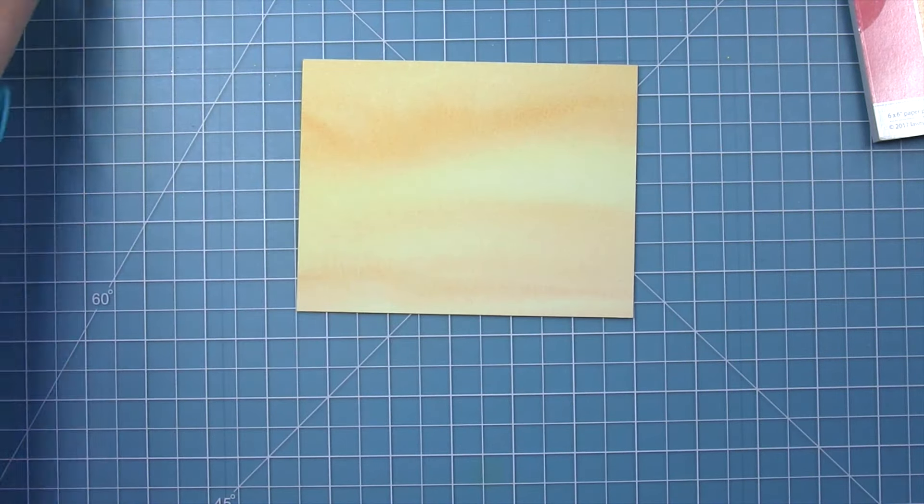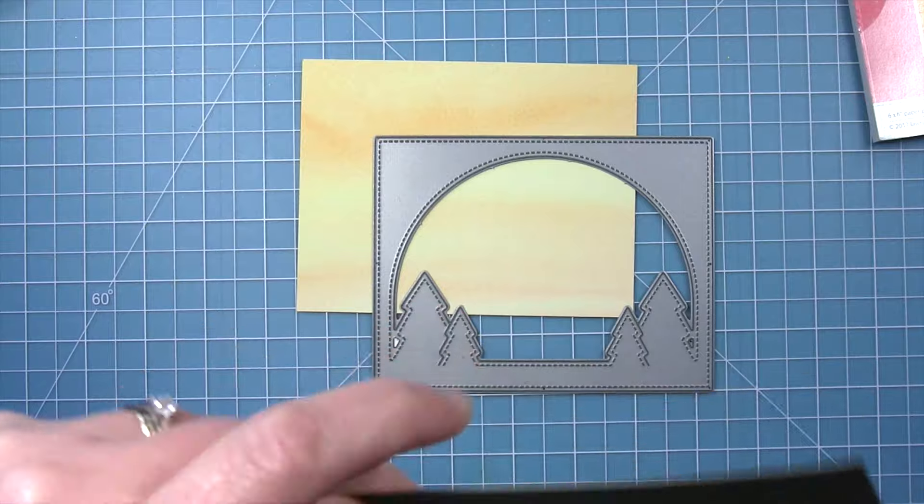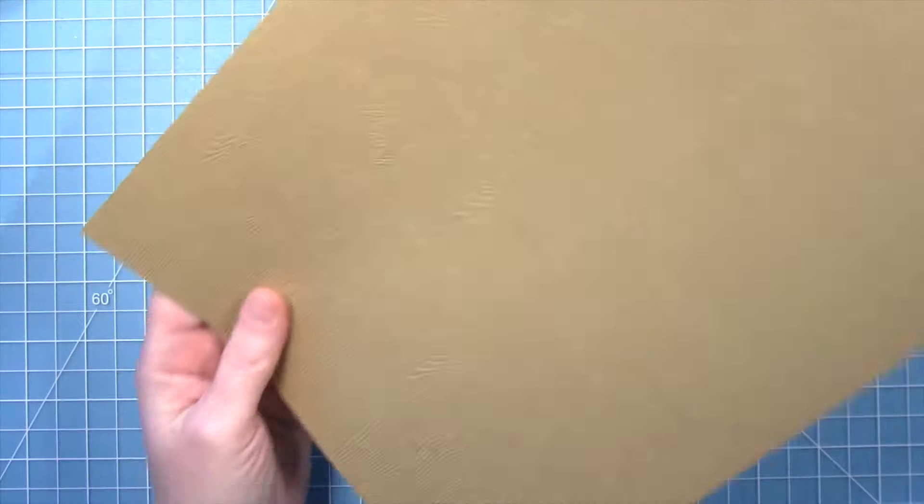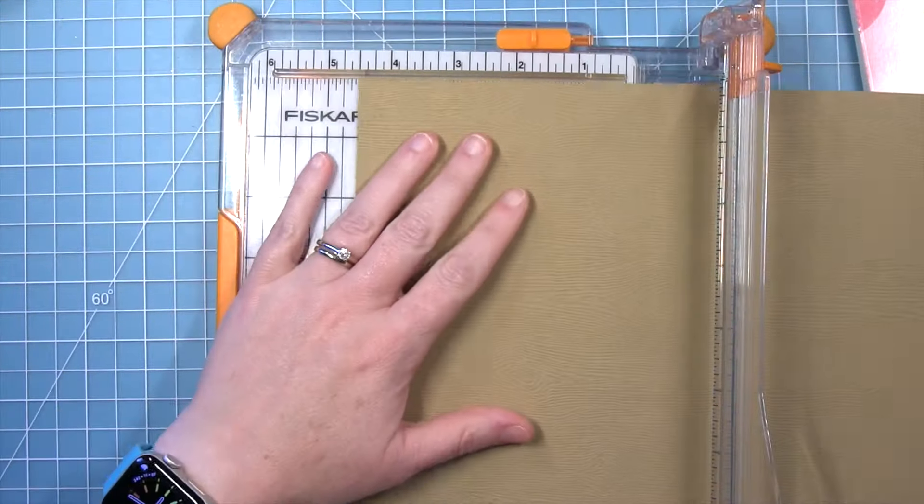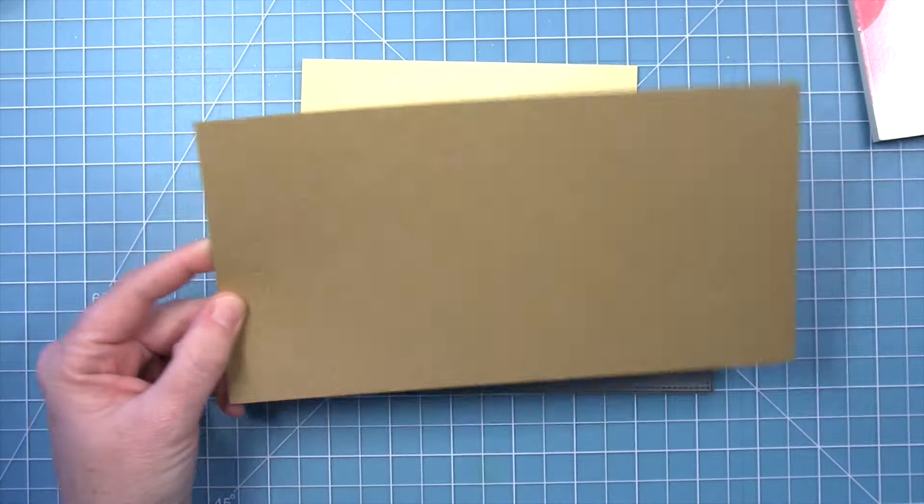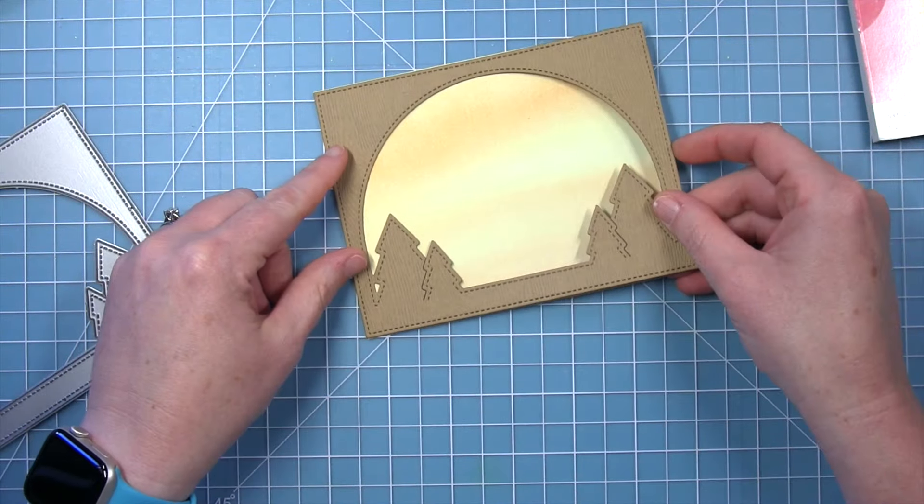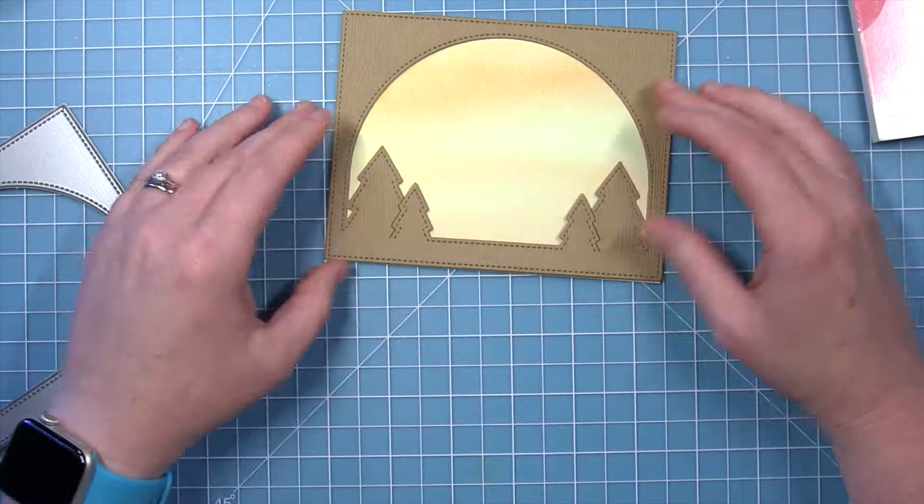For my yellow, I will cut that down to four and a quarter by five and a half. And then for the forest backdrop, I wanted this to look like a wooden picture frame, so I'm cutting this from the light brown wood grain cardstock. I'm going to trim this down so that when I cut my forest backdrop die, my wood grain runs vertically. So I've cut that backdrop and you can see how this is going to shape up.